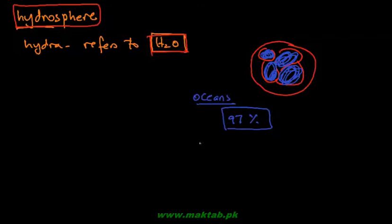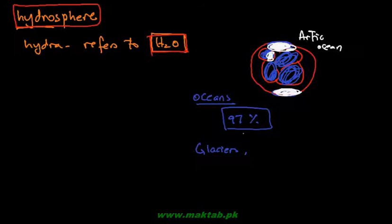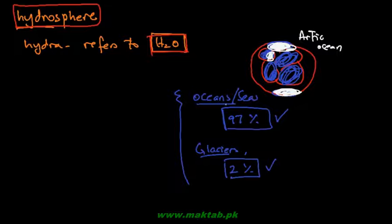Besides oceans, some water is found in glaciers and polar ice caps. At the north pole and south pole - like Greenland and Antarctica - temperature is very low and ice is frozen there. These areas also contain water in solid form. This composes about 2% of the total water on earth. So seas and oceans have 97%, and glaciers have 2%. The problem with ocean water is that it is very saltish and not suitable for drinking.